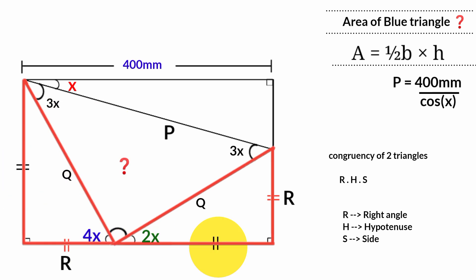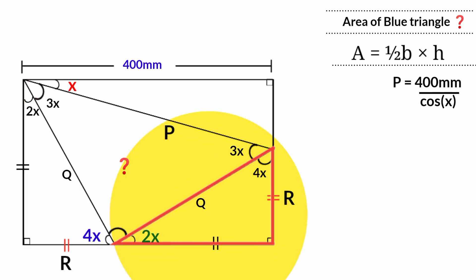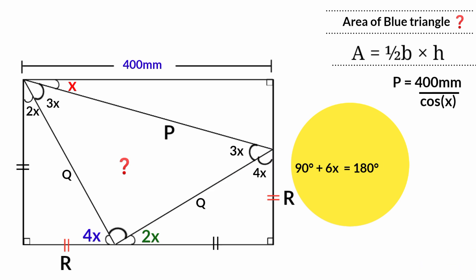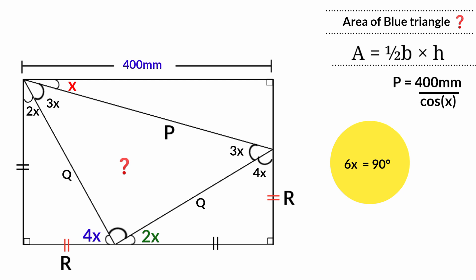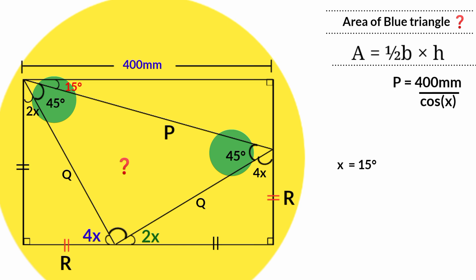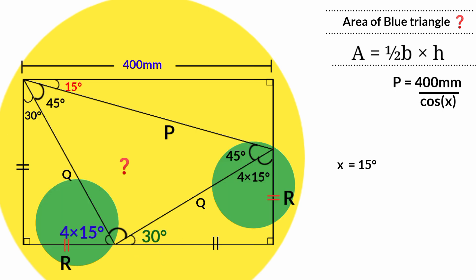Therefore this side and this side are equal, and the angles must be 2X and 4X respectively since the triangles are congruent. From this triangle, since the sum of angles is 180 degrees: 90 + 4X + 2X = 180 degrees. So 6X = 90 degrees, and dividing by 6 gives X = 15 degrees. Substituting: 3 × 15 = 45 degrees, 2 × 15 = 30 degrees, and 4 × 15 = 60 degrees.